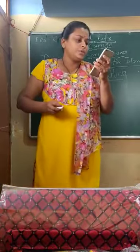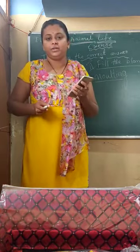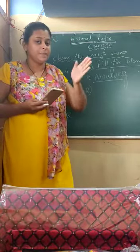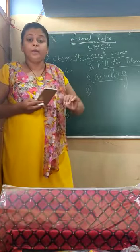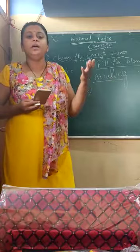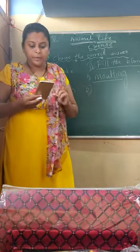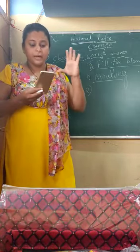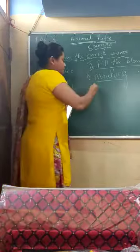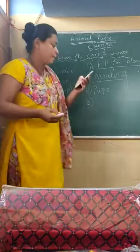Second question: the stage during which a larva covers itself with a cocoon is called dash. In the life cycle of the butterfly, there is a stage where the larva covers itself with a thick shell. That stage is called pupa. The answer is pupa.